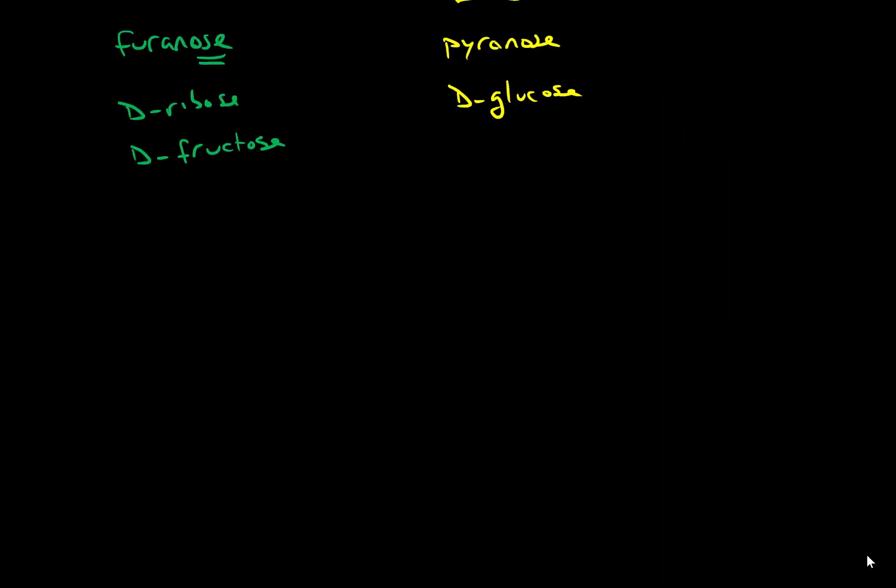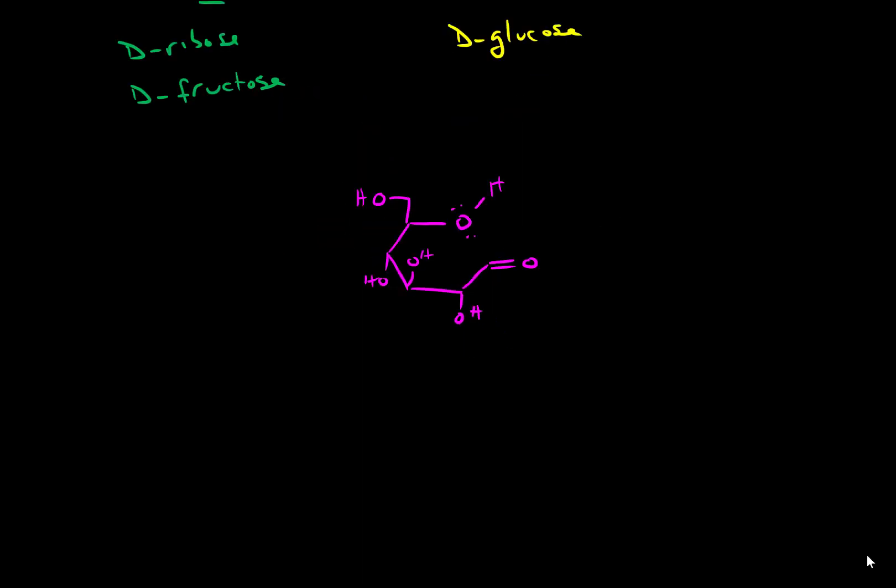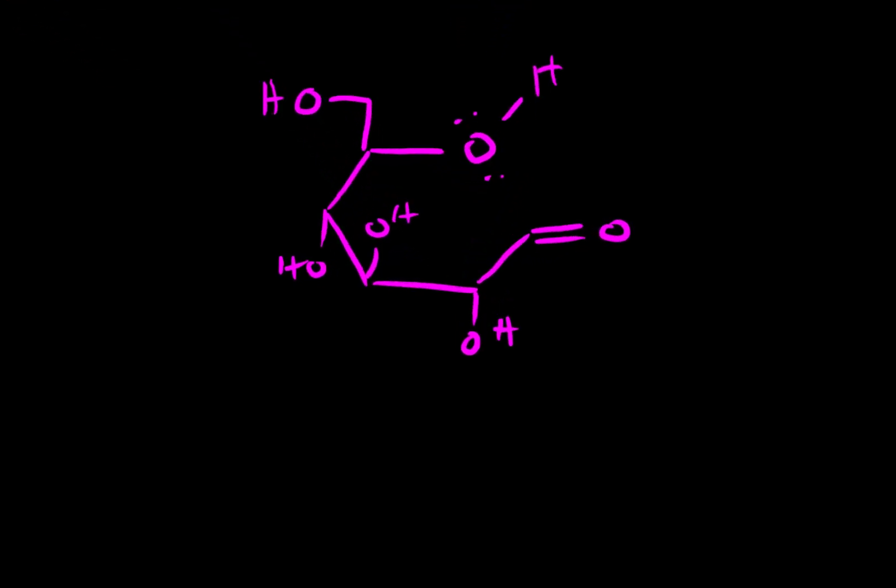So what I want to first do is look at a form of glucose that we've seen in the past. And I'm going to draw it in its linear form, but it's going to adopt the geometry that we know that it eventually does when it gets into its pyranose form. So it's linear because we have not closed the ring yet, but I've drawn it in a way where you can very clearly see the general architecture of the ring.